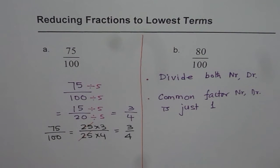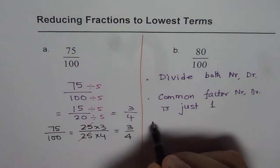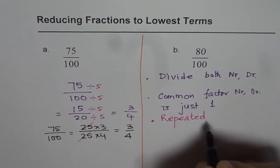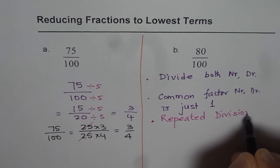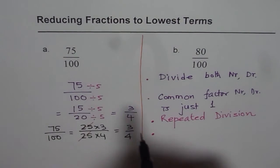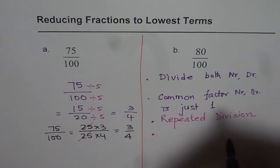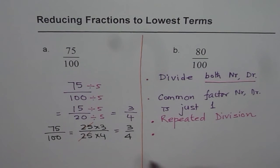One method which we learned, I will call this as method of repeated division. Repeated division means just repeat the process of dividing by a number which you can use for both numerator and denominator. The key thing is you do the operation on both numerator and denominator.